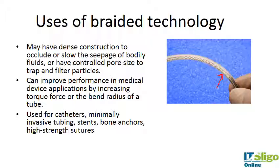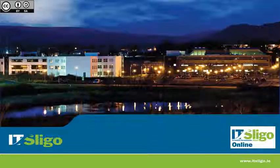You could have a very dense construction which occludes or slows seepage of body fluids, or you can have a controlled pore size to trap and filter particles. You can improve performance in medical devices by increasing torque force — because it looks almost like a spring, you can bend the catheter and it has good pushability and good control over where you can direct the catheter, with a good bend radius. It's used for catheters, minimally invasive tubing, stents, polymer stents, bone anchors, and high-strength sutures.